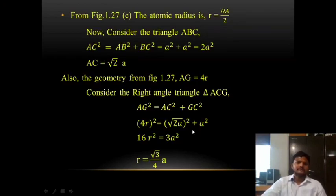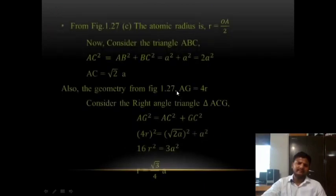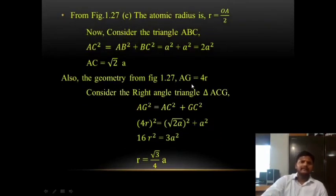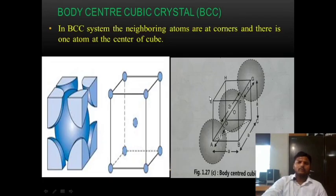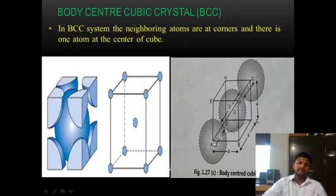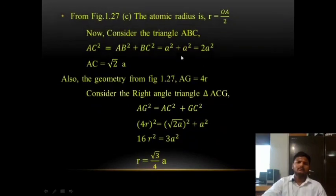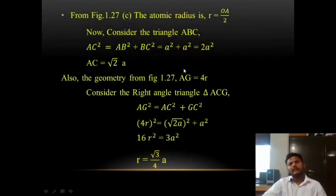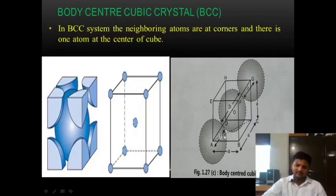From figure 1.27c, the atomic radius is r = OA/2. Now consider triangle ABC from the figure.